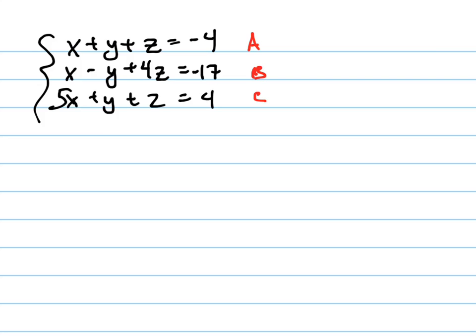So one of the methods of doing it, and one of the simplest ways besides a matrix, is to combine these together to eliminate a variable. We see right here that the Y's would be easy to eliminate because this one is negative, and the other ones are positive.